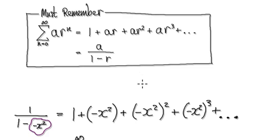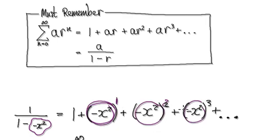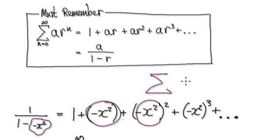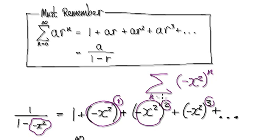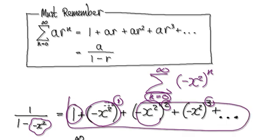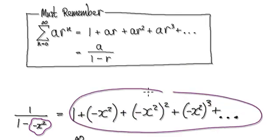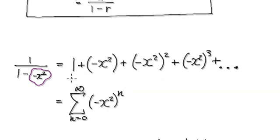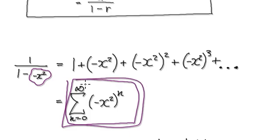Once you're here, rewrite it in summation form. If you imagine the first term to be 1, here you've got this same thing to the power of 1, same thing to the power of 2, same thing to the power of 3 — so 1, 2, 3, and so on. To write it in summation form, the recurring thing is minus x squared to the power of n. n starts at 0, so the first term is something to the power of 0, which is 1. So n goes from 0 to infinity. That's your power series representation of the function.